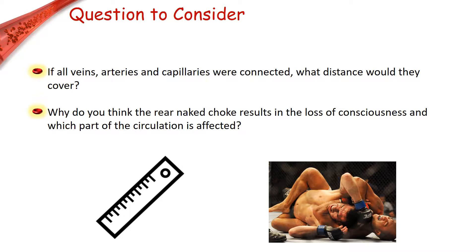We have two questions for our viewers to consider today. First, if all veins, arteries, and capillaries were connected, what distance would they cut? Second, a typical human body contains 5.6 litres of blood, with the heart pumping about 7,500 litres of blood a day. Many professional fighters, however, disrupt this cycle and flow by using the rear naked choke in an attempt to knock out their opponent.